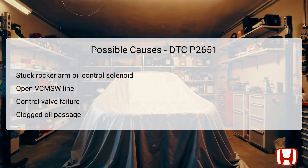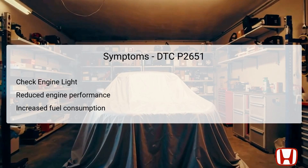Additionally, a failure in the rocker arm oil control valve itself might contribute to the issue. If this component is faulty, it won't adequately manage the oil flow, leading to incorrect pressure readings. Lastly, clogged passages in the oilway can restrict flow and pressure, resulting in conditions that mimic a sensor fault. Identifying these causes accurately can guide the repair process and help restore proper VCM function.